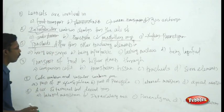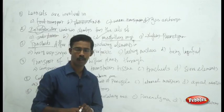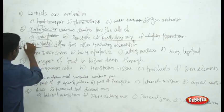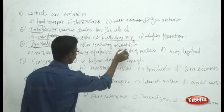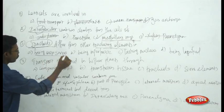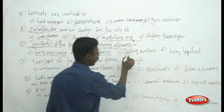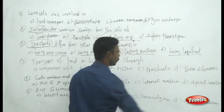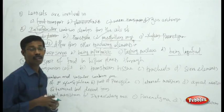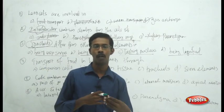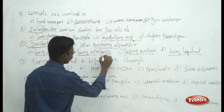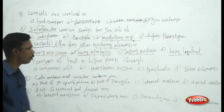Next question: tracheids differ from other tracheid elements in what way? The choices are having Casparian stripes, being imperforate, lacking a nucleus, and being lignified. The answer is that tracheids are imperforate — there are no holes or pores in tracheids. They are imperforate for any substances. That is what you need to remember.